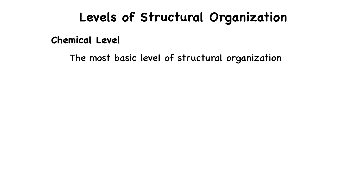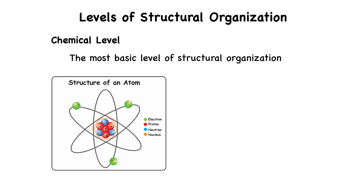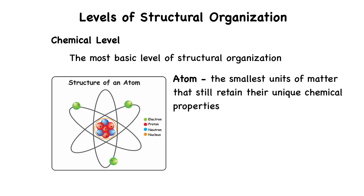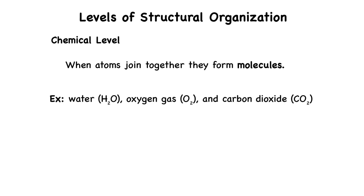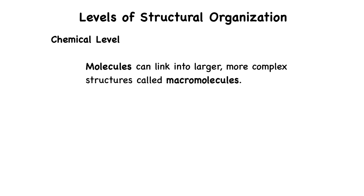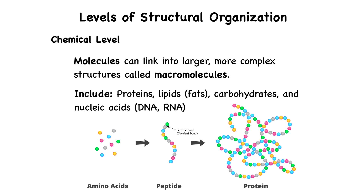We begin at the chemical level, the most basic level of structural organization. This includes atoms, which are the smallest units of matter that still retain their unique chemical properties. Examples of atoms include carbon, hydrogen, oxygen, and nitrogen — elements that make up most of the human body. When atoms join together, they form molecules such as water, oxygen gas, and carbon dioxide. These small molecules can then link into much larger, more complex structures called macromolecules. These include essential biological compounds like proteins, lipids, carbohydrates, and nucleic acids like DNA. Together, these chemical building blocks form the raw materials of life, and they lay the foundation for everything else that follows in the organization of the human body.